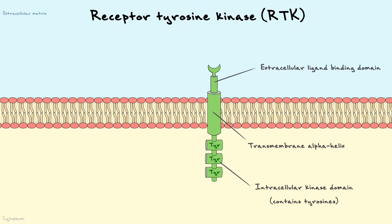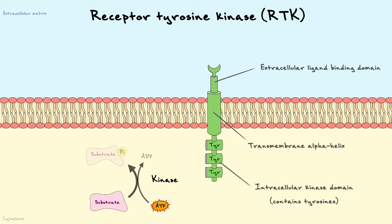As we've learned in the previous section, kinases are a particular set of enzymes that take one of the three phosphate groups of ATP and transfer it onto a given substrate. This process is referred to as phosphorylation and it usually leads to activation or deactivation of the substrate. Examples of substrates can be ion channels, structural proteins, transcription factors, and many more.